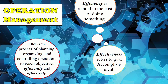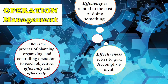Effectiveness, on the other hand, refers to goal accomplishment. For example, when one is able to reach his objectives — say, produce 10,000 units in one month — and within that month he is able to produce 10,000 units, he is said to be effective.